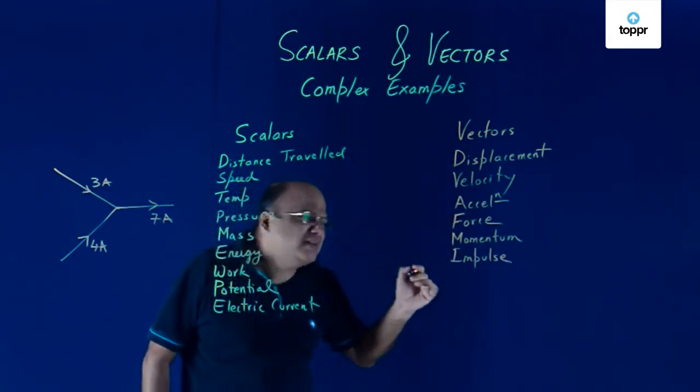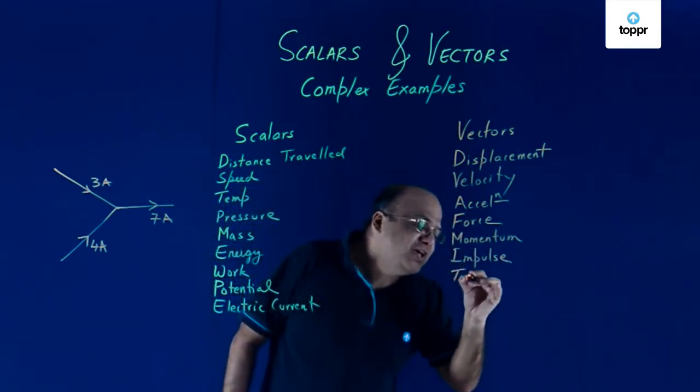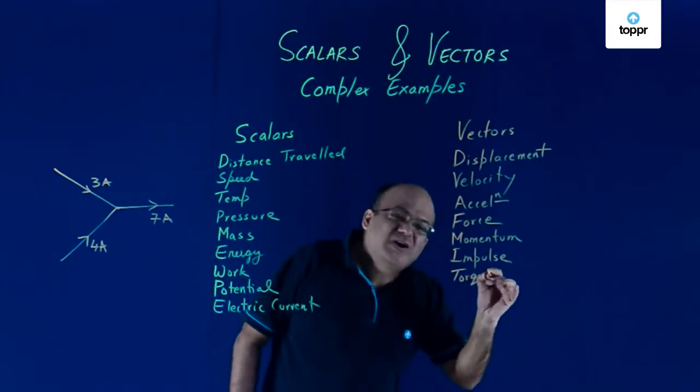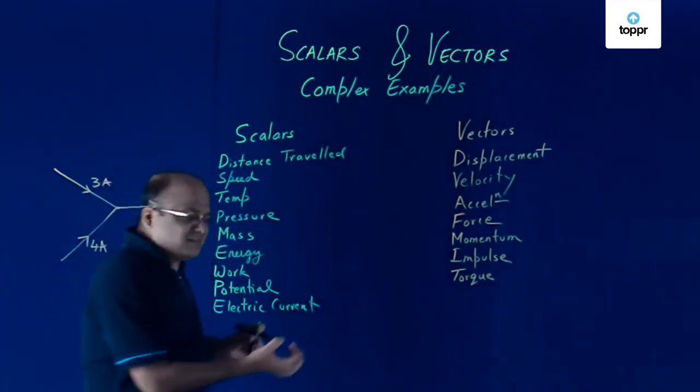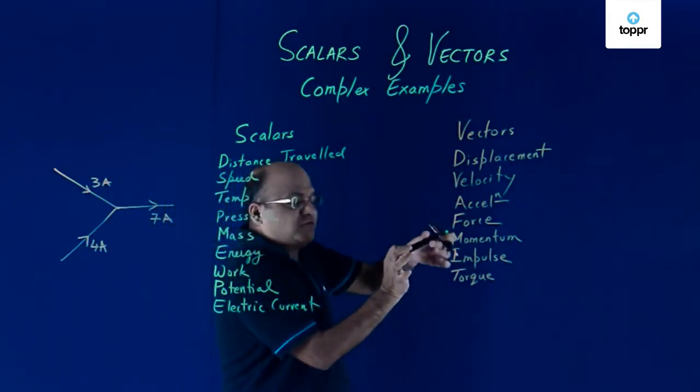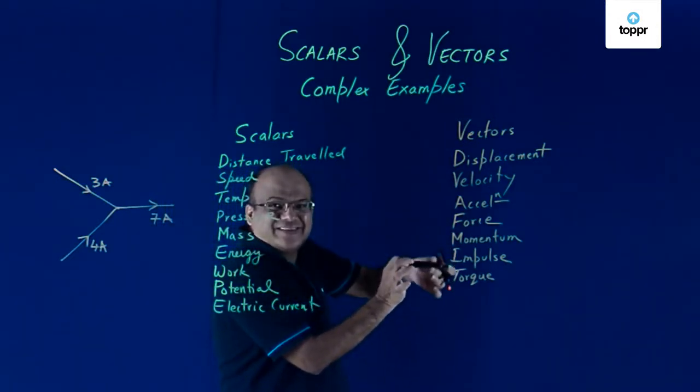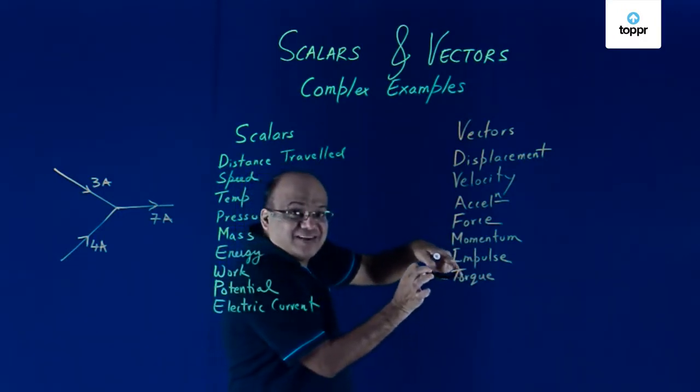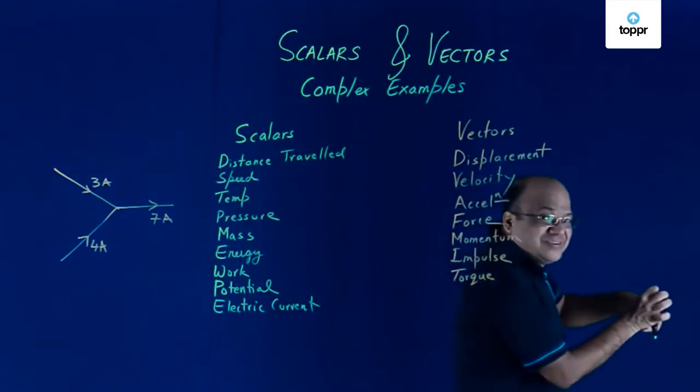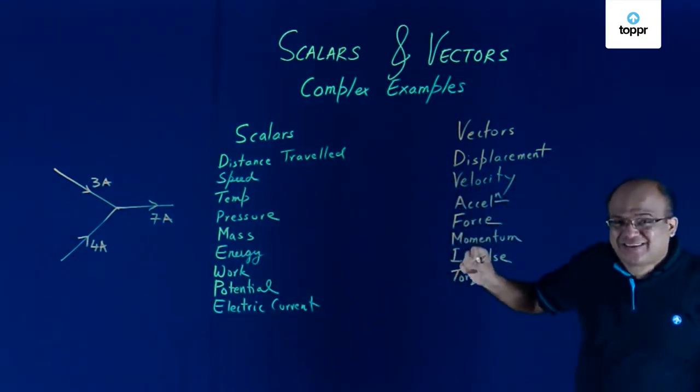Torque. The turning effect of a force is also a vector. Torque is force into perpendicular distance. Suppose this pen can rotate about this hinge, we can say. Right? If I apply a force like this, this is creating some turning effect. That turning effect is called torque. Torque is a vector.